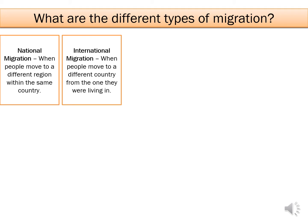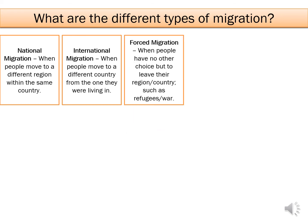So if you were living in Australia and chose to move to the UK, that would be international migration. You have forced migration when people have to leave their country because of war, or they are refugees, or they have religious persecution and they have to leave because they are not safe in their country of origin.